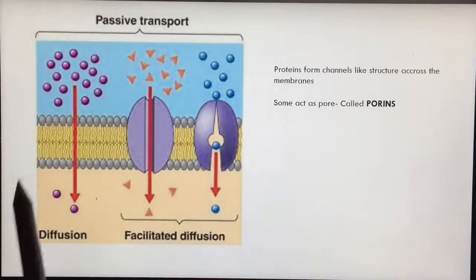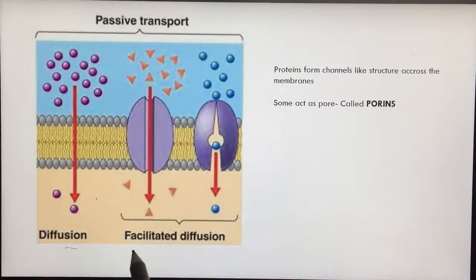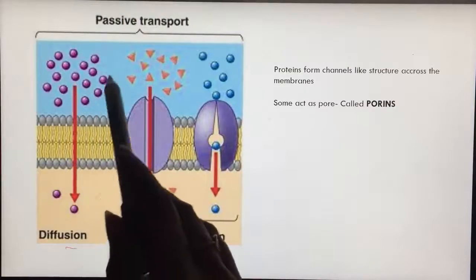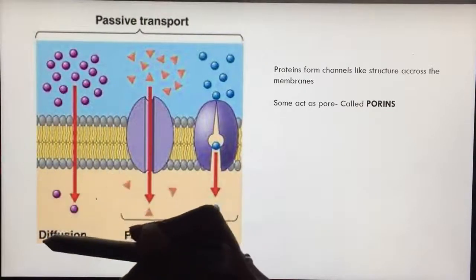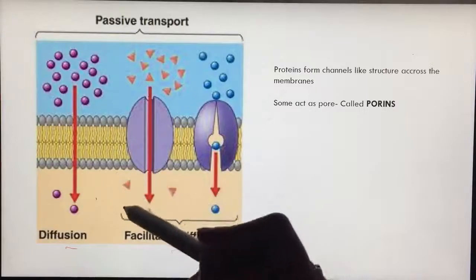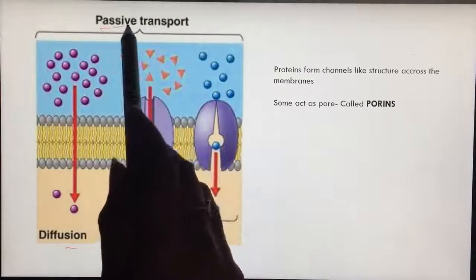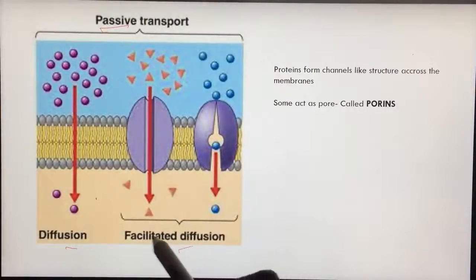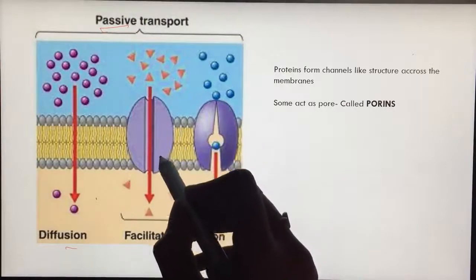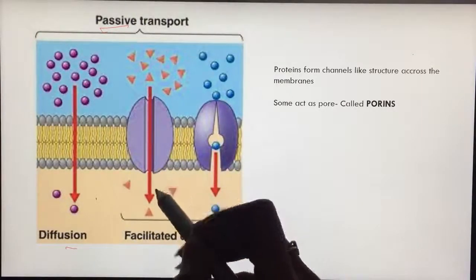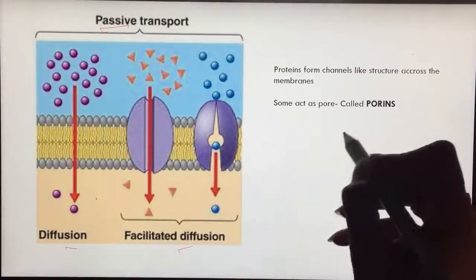There are basically two types of passive transports - diffusion and facilitated diffusion. Diffusion occurs without any involvement of energy. Passive, like it says passive, no energy requirement. Facilitated diffusion occurs through proteins. Membrane proteins are necessary for it. Best examples are porins and channels.